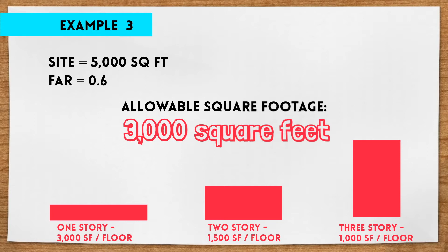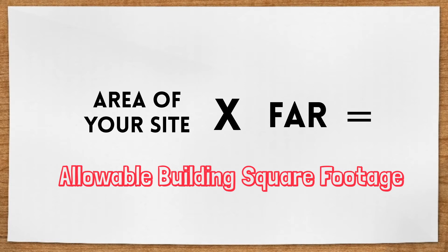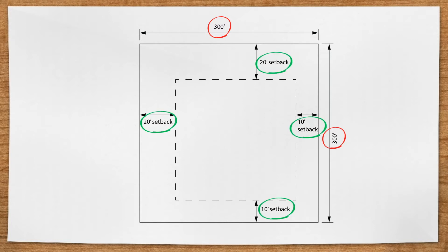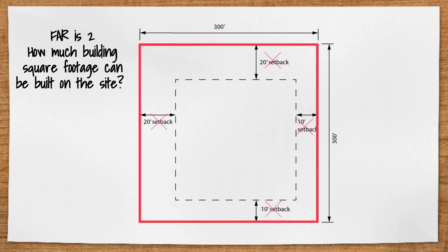You figure out what the area of your site is and multiply it by the FAR number to get your allowable building square footage. You might see problems where you're given the overall site dimensions and the setback dimensions, but the question is regarding FAR. Don't get confused — ignore the setback dimensions when calculating with FAR. The allowable building area is based on the whole site area, not the area within the setback dimensions.